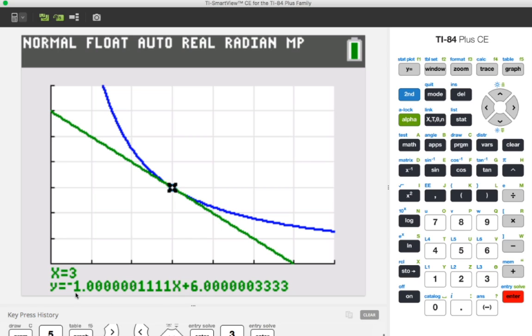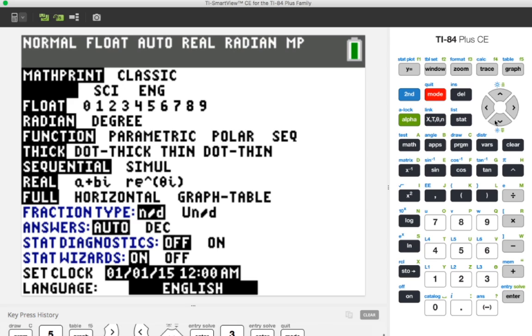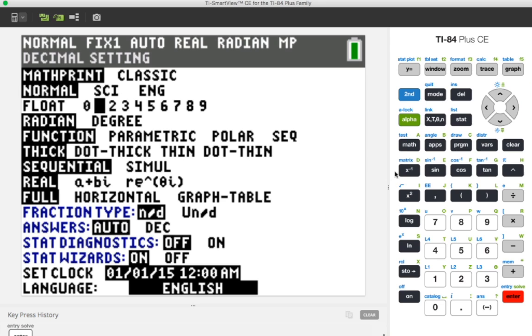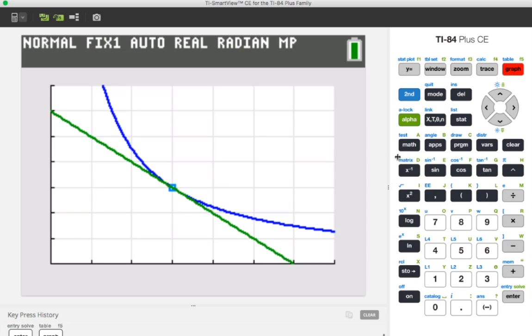If we look closely we see that all these place values after the decimal point, there's so many, it's pretty insignificant for what we're trying to do. But we can clear that up by pressing on the mode button. Let's scroll down to float. Let's get out of the float and let's go ahead and make it use one place after the decimal point. Let's press enter on that. Let's go back to graph and then back to second and then program which gets us to the draw.